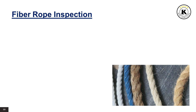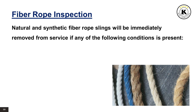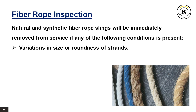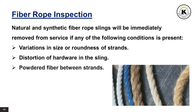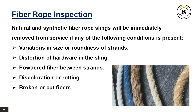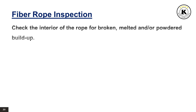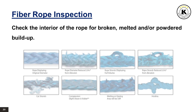Natural and synthetic fiber rope slings will be immediately removed from service if any of the following conditions are present: 1. Variations in size or roundness of strands. 2. Distortion of hardware in the sling. 3. Powdered fiber between strands. 4. Discoloration or rotting. 5. Broken or cut fibers. 6. Abnormal wear. Also check the interior of the rope for broken, melted, or powdered build-up.